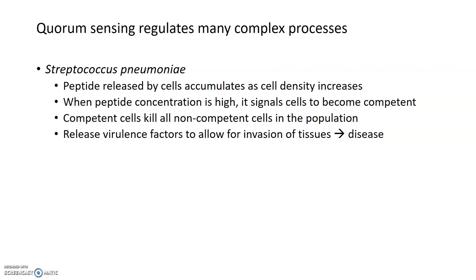Quorum sensing was also discovered to regulate virulence in Streptococcus pneumoniae. A peptide is released by S. pneumoniae cells as their density increases, and when the concentration of that peptide gets really high, it triggers S. pneumoniae to become competent — able to take in DNA via transformation. It also triggers competent cells to kill non-competent cells from the population. So quorum sensing can not only favor the release of virulence factors allowing S. pneumoniae to invade tissues and cause disease, but also makes the population susceptible to taking up DNA from the environment, including antibiotic-resistance genes.